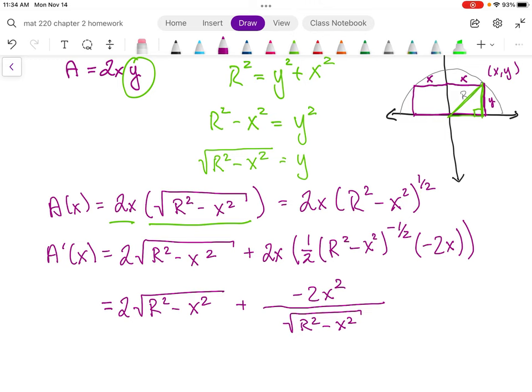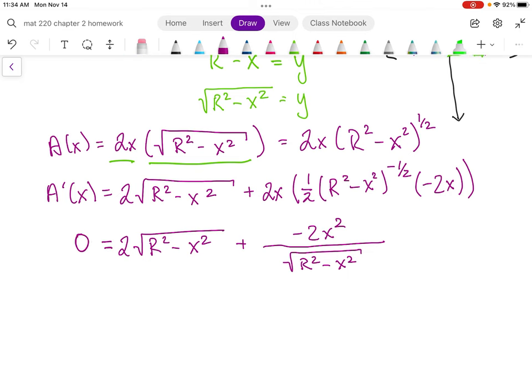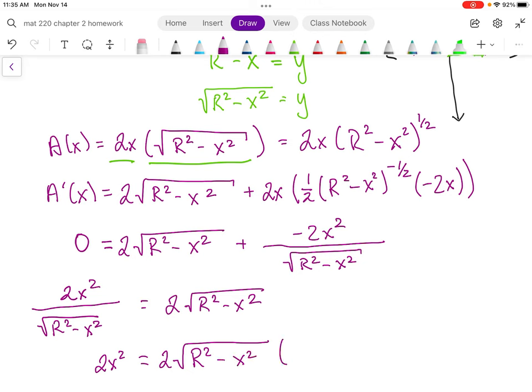All right, and we want to know when this derivative is equal to zero. So just like with some of our other problems that involved negative powers, I'm going to move this term with the radical in the denominator over to the left side of my equation by adding it. So I get 2x² all over the square root of r² minus x², and that equals the 2 times the square root of r² minus x². And I want to get that radical out of the denominator. So I'm going to multiply both sides by it. So I'm keeping my 2x² over here. I have 2 times the square root of r² minus x². And that's times the same exact thing, r² minus x².